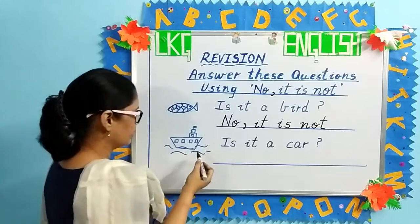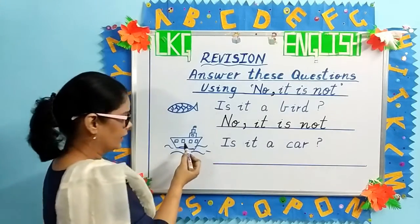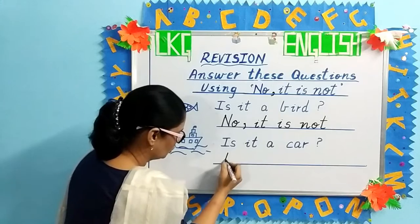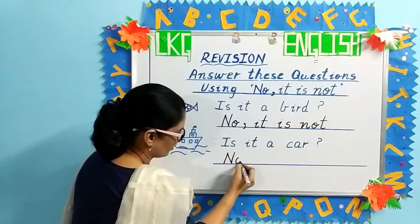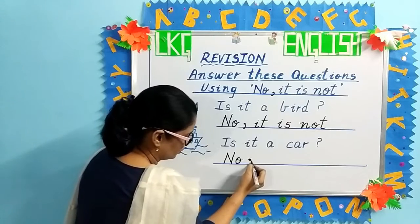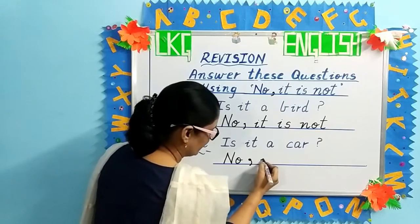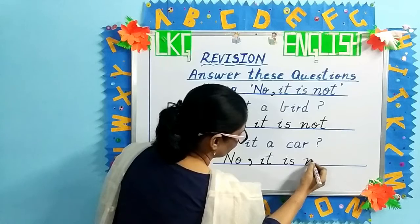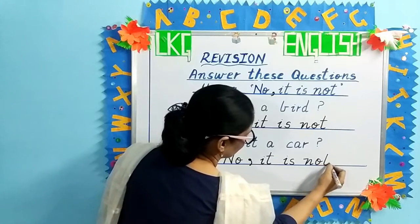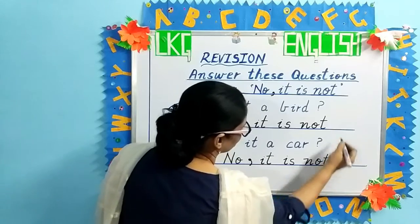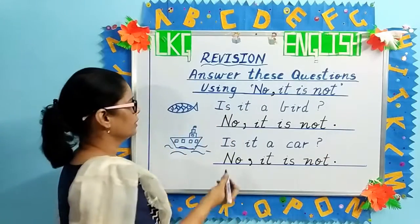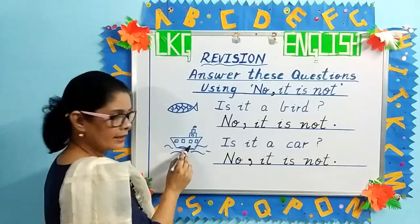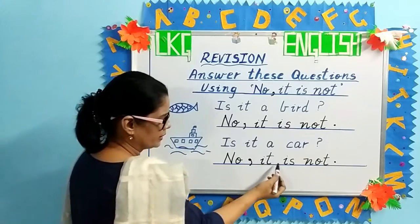The next question is: is it a car? Is this picture a car, children? No — it is a ship. So your answer will be: no, comma, dot and a tail — no, it is not. Put a full stop. Is it a bird? No, it is not. Is it a car? No, it is not.